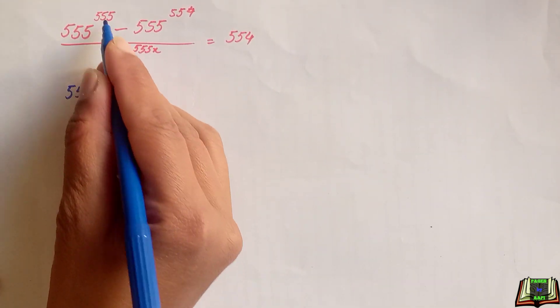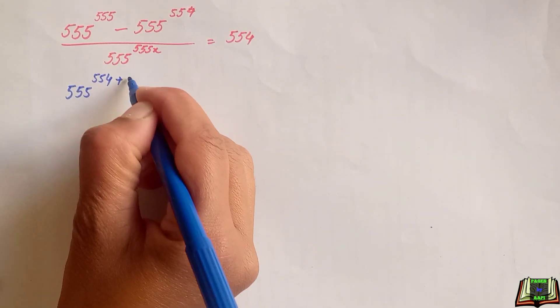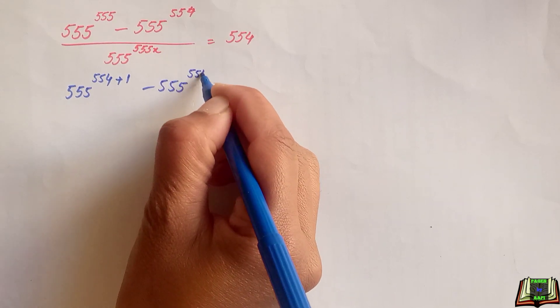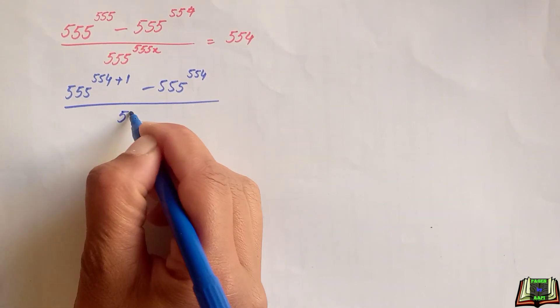555 to the power 555 can be written as 554 plus 1 because 555 is the same as 554 plus 1 and rest part as it is.